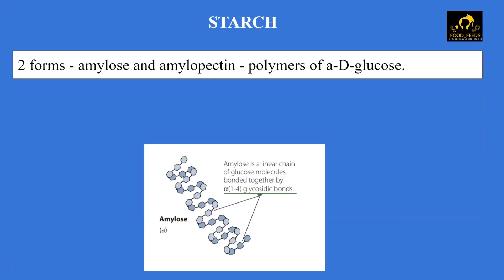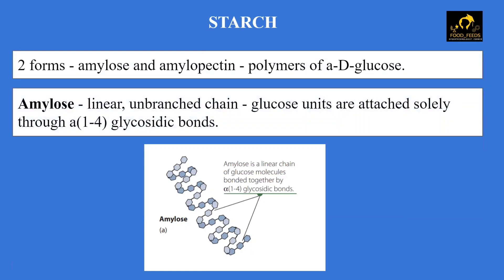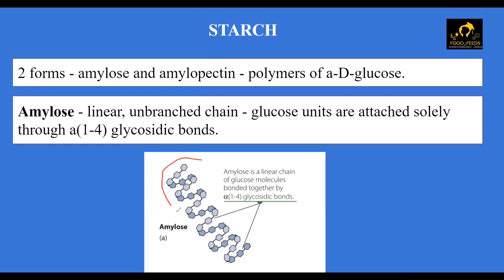The most common digestible polysaccharide in plants is starch, and it has two forms: amylose and amylopectin. Both are polymers of alpha-D-glucose. The amylose molecule is linear and unbranched, with glucose units attached through alpha-1,4 glycosidic bonds. In water, this amylose chain adopts a helical conformation.